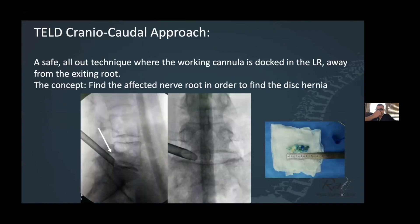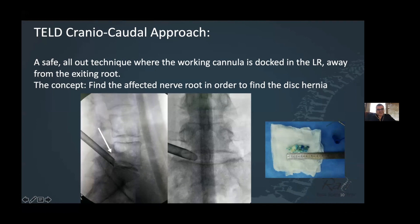Moving to the craniocaudal approach — it's a safe, all-out technique. The idea is simply to dock your working cannula in the lateral recess. You stay out of the disc at all times and address the pathology where it is. The concept is straightforward: you don't focus on the disc fragment, you focus on the compressed nerve root. If this is a traversing nerve root problem, you push your cannula immediately into the canal while remaining all-out in the canal to take the herniated fragment pressing on that S1 traversing nerve root.